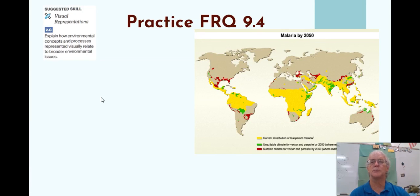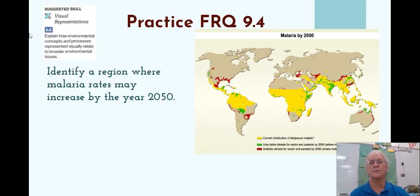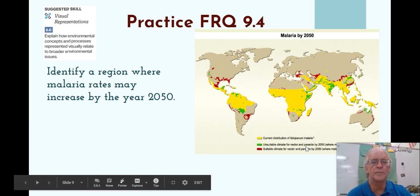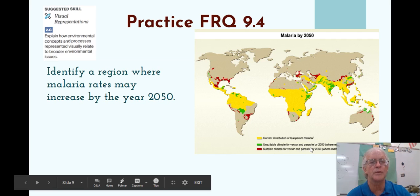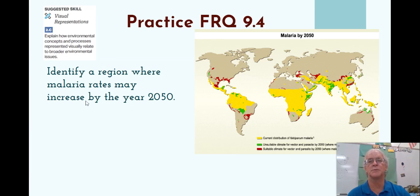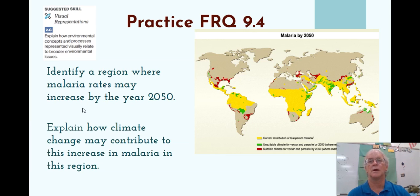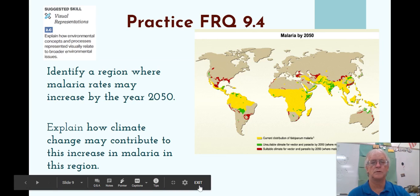Practice FRQ 9.4. Can you identify a region in this map talking about malaria by 2050, where yellow is the current distribution of malaria, green is where it will be unsuitable for the vector by the year 2050, and red is climates where it's going to be newly infected by 2050? Can you identify a region where malaria rates may increase by the year 2050? And can you explain how climate change may contribute to this increase in malaria in that region? Thank you, and hopefully that was helpful.